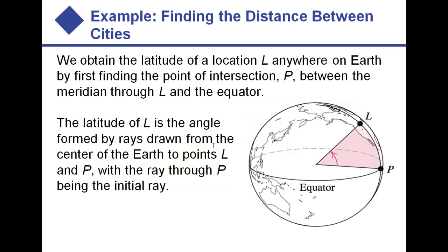We can find the distance between cities using this idea. The latitude of a location is the angle formed by rays drawn from the center of the earth to that point and a reference point. The initial side is our reference ray, and the terminal side reaches the location. Starting at the center of the earth, connecting two points on the surface creates an angle that we use to figure out the distance — we have the angle and the radius (the size of the earth), so we can find the arc length between the two cities.